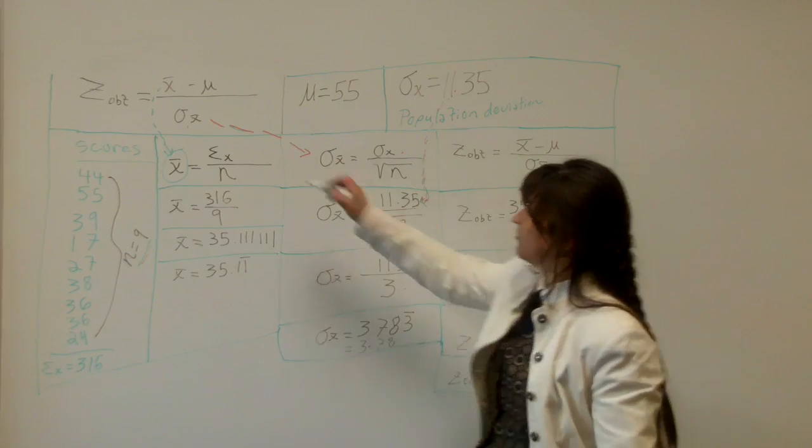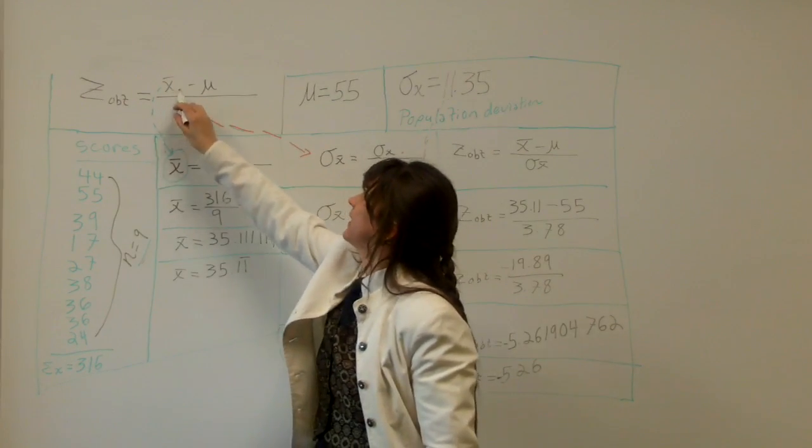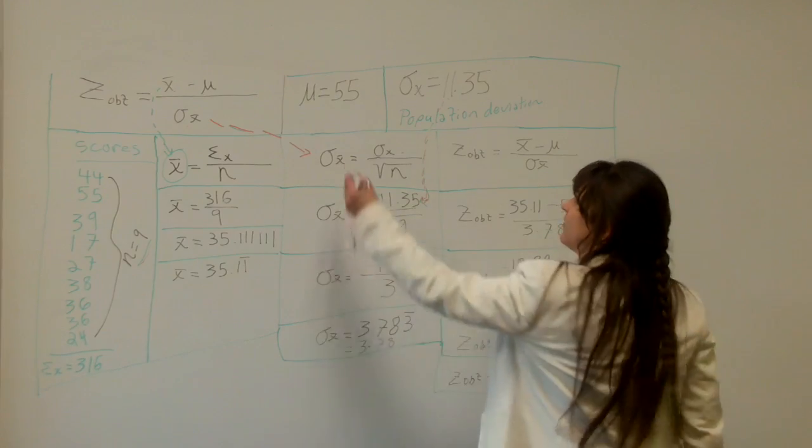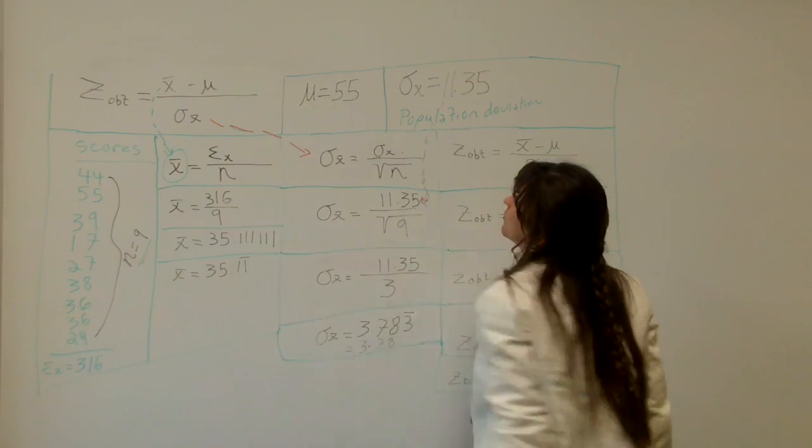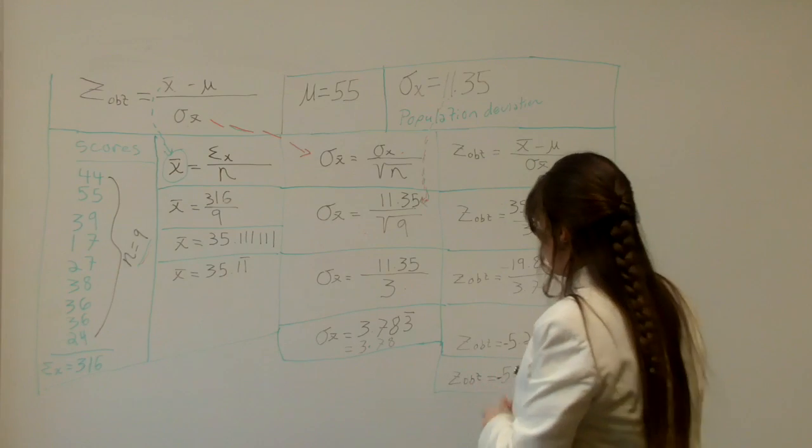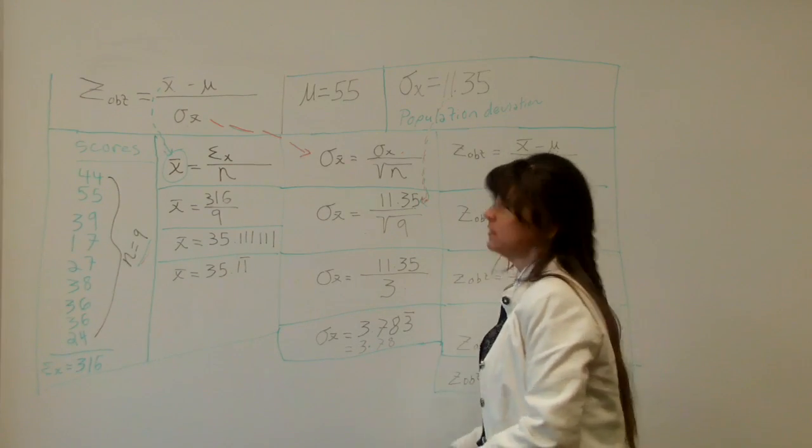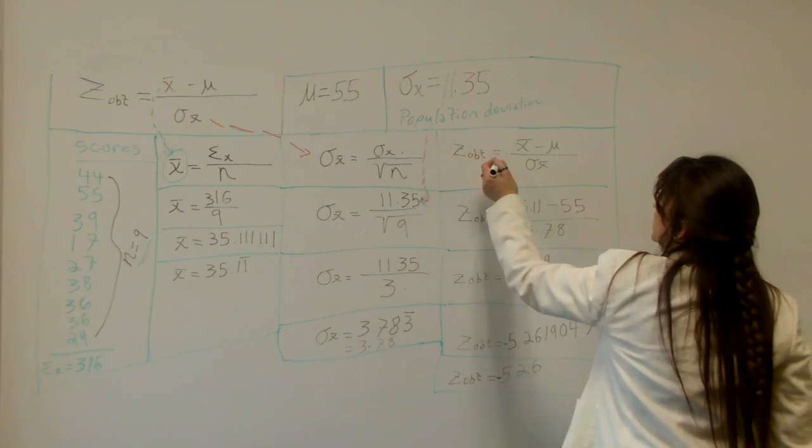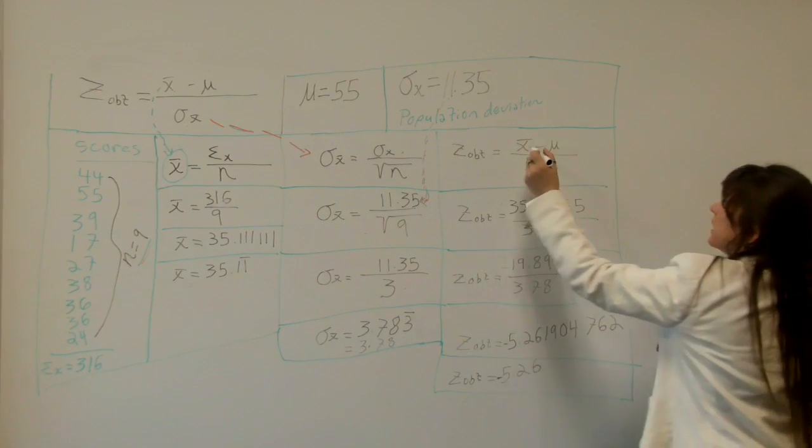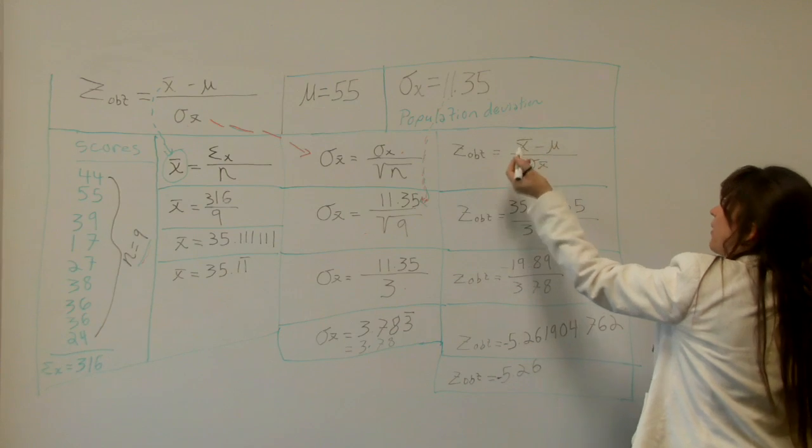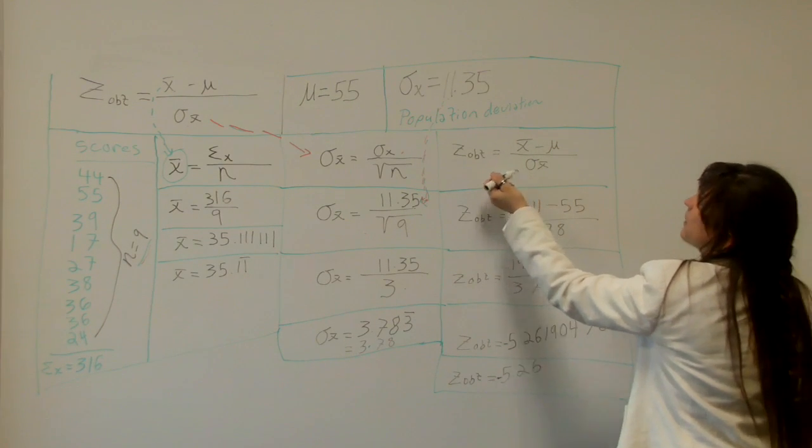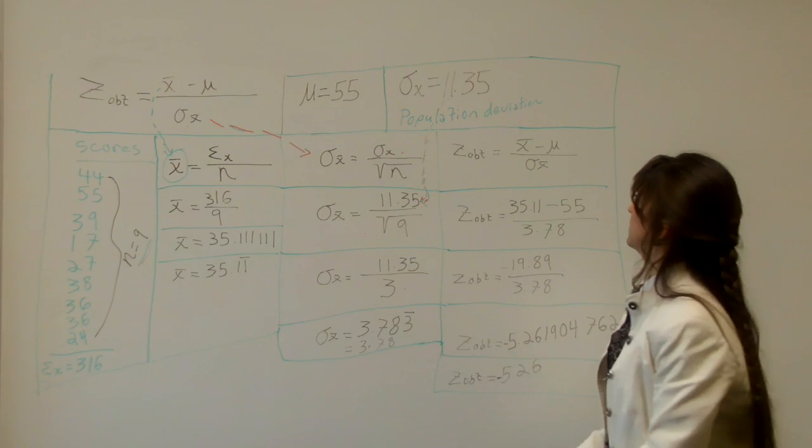Now we have these two parts for the formula. So we're good to go. We can do it because it already gave us the population mean, which is mu. So we come over here. We're ready to fill in our equation. Z obtained equals sample mean minus population mean, or bar X minus mu, divided by the population deviation mean.